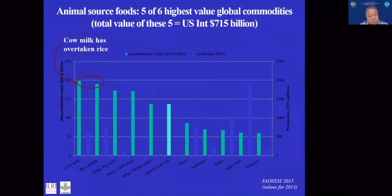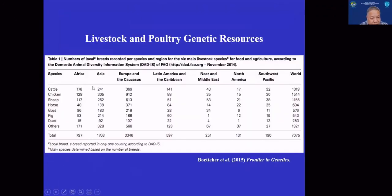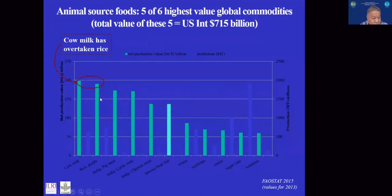Livestock production is based on domesticated animals where we produce animal-source foods. To give you an idea of how important livestock production is, this slide shows you the commodity value of all major agricultural products. You can see the first commodity is cow milk, which has a value overtaking the rice we produce in the world, followed by another three livestock products: chicken meat, cattle meat, and pig meat. Among the top five daily commodities, livestock contributes four of them.